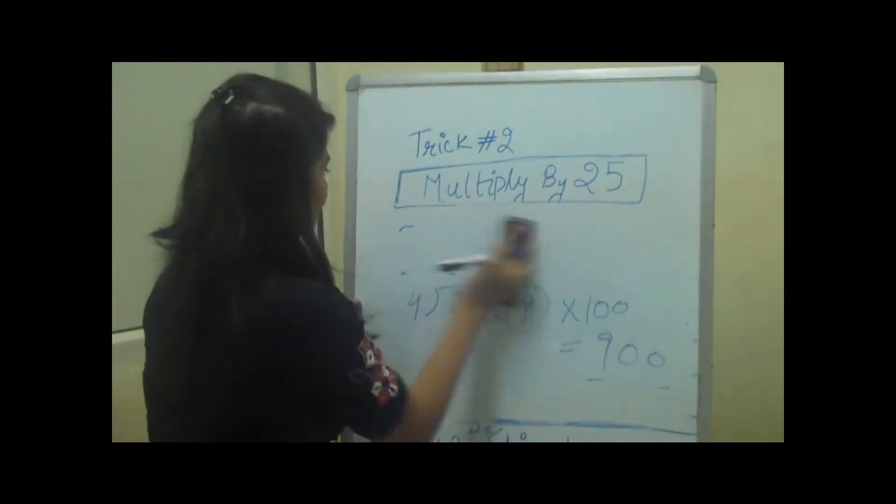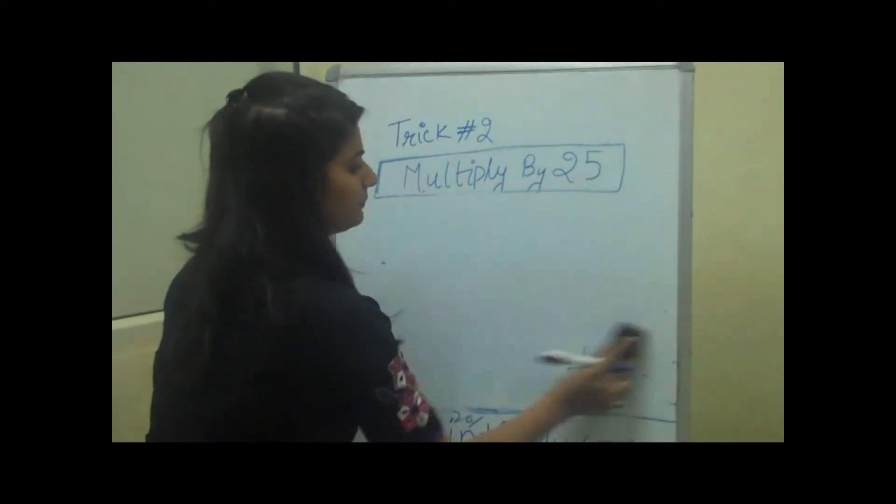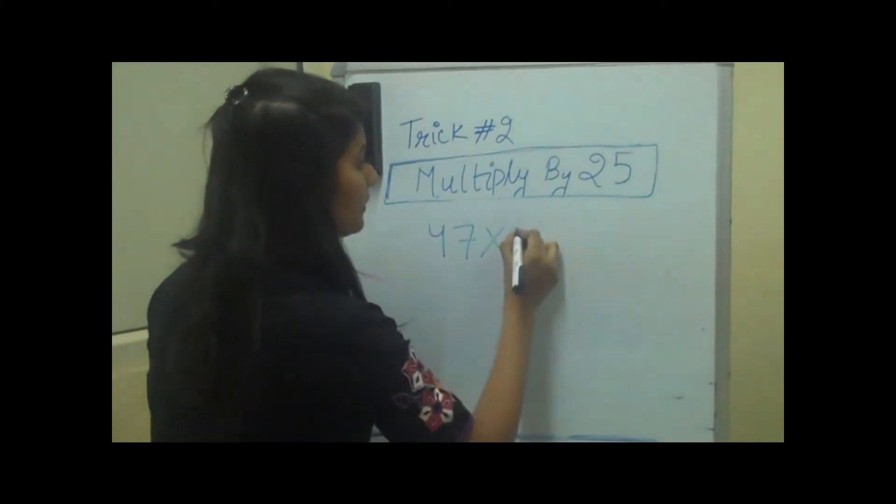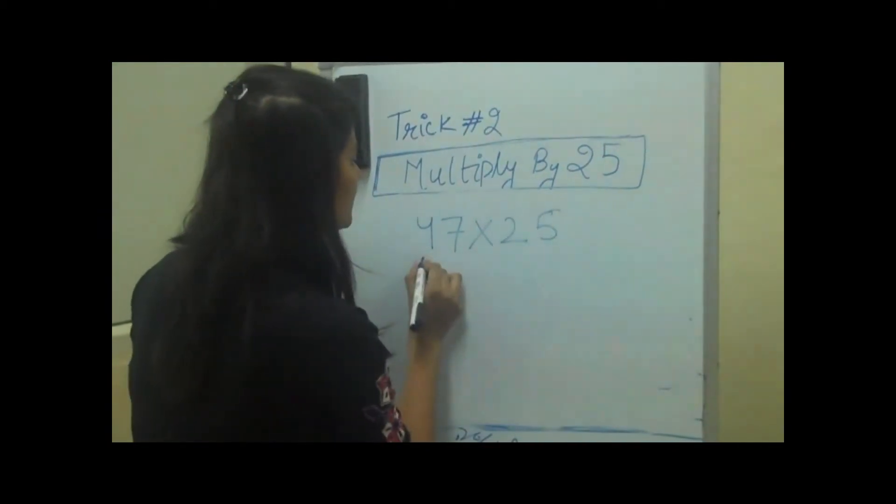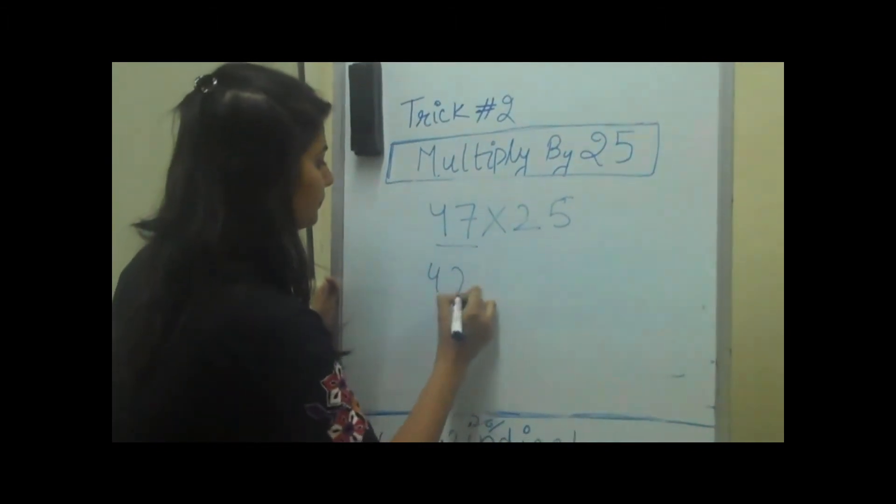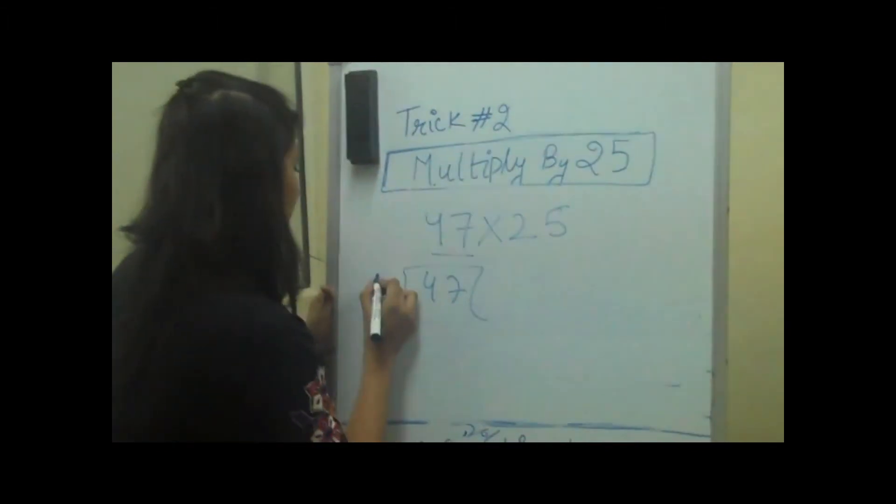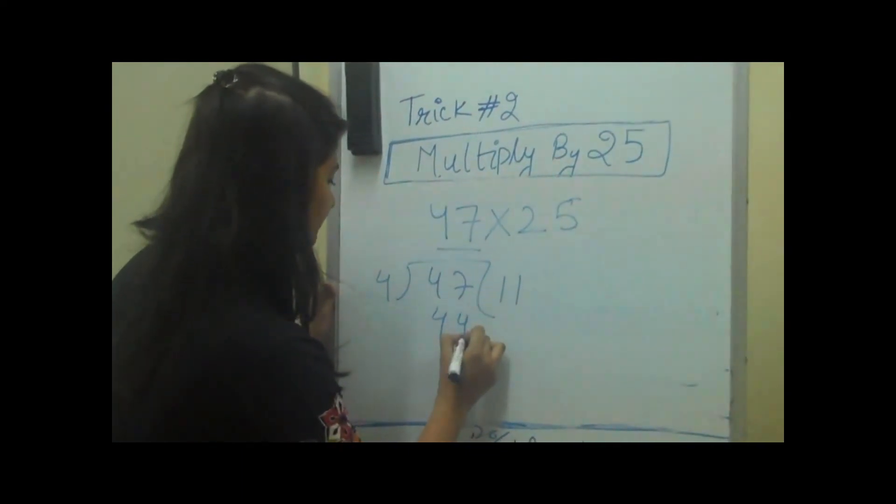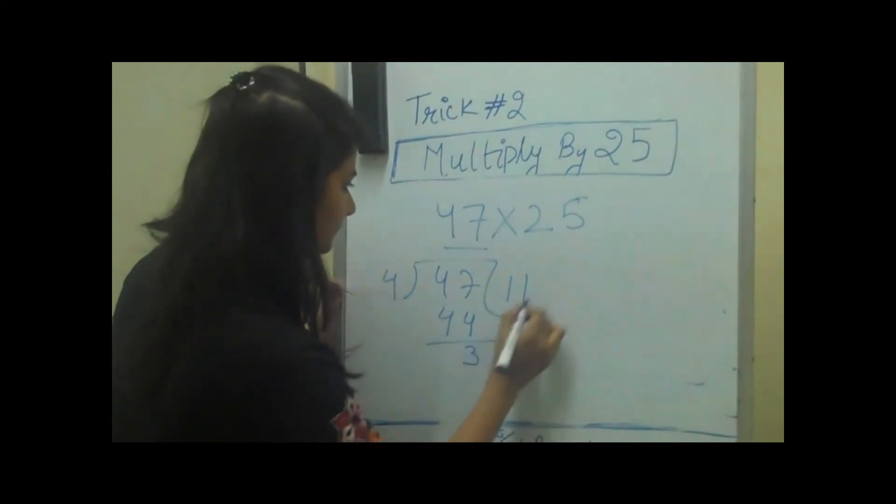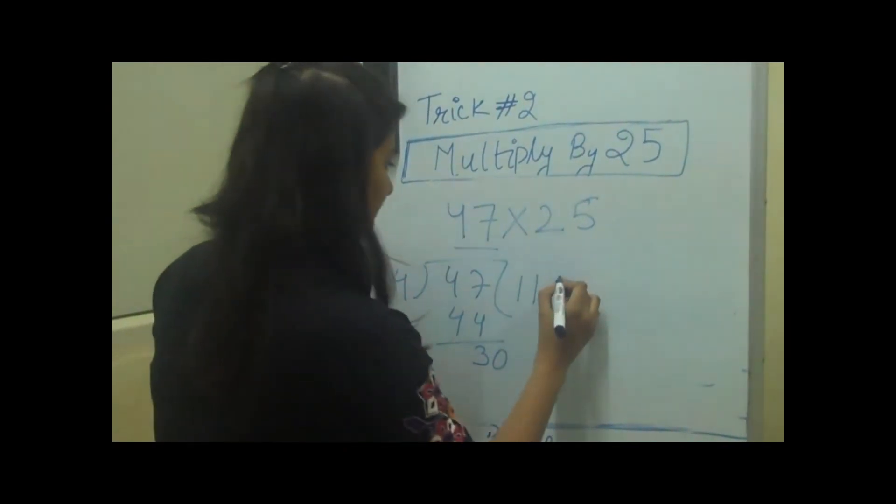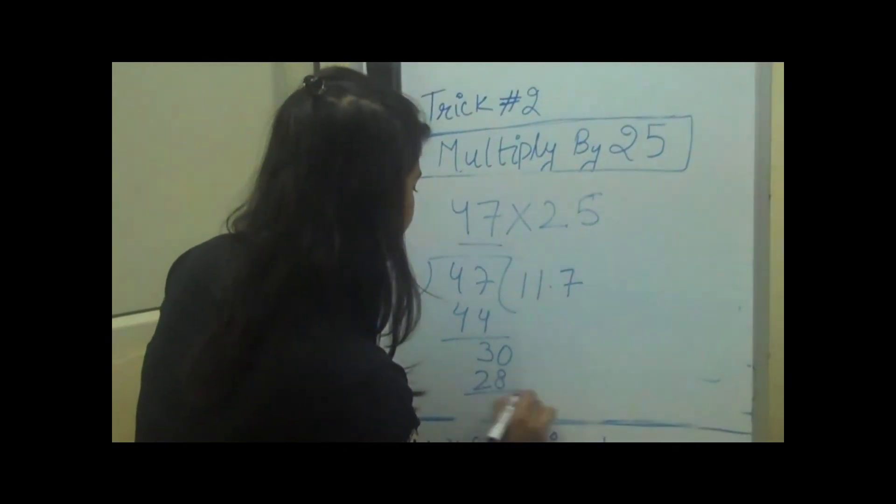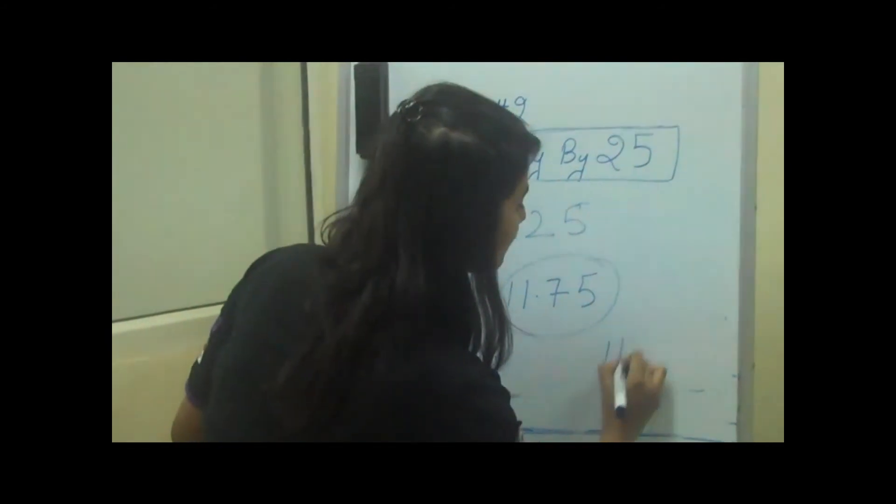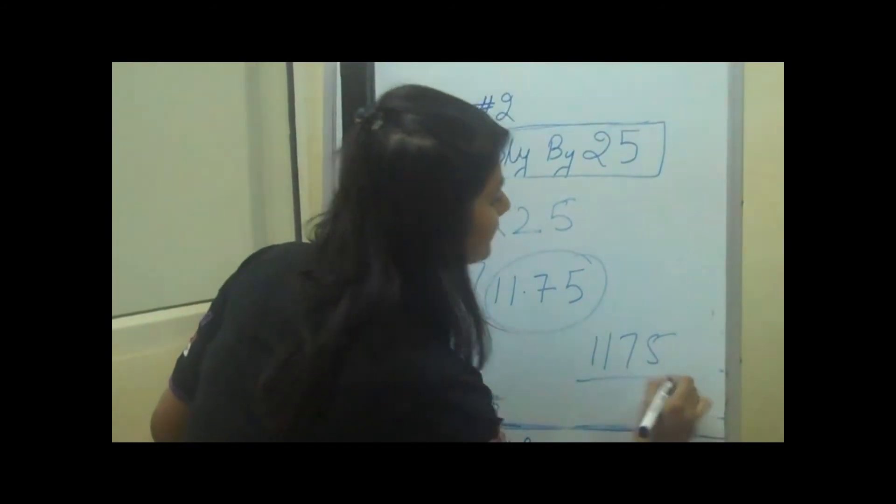Let's take another example. If we have a number 47 and we multiply it by 25, first we will divide this number by 4 and then we multiply it by 100, which makes 1175 as the answer.